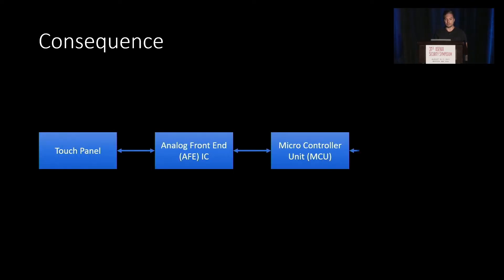So how does this even happen? Here you see a touchscreen pipeline. On the left side, the touch panel, which gets sensed by the analog frontend IC. This senses changes in capacitance on the touch panel when touched, which then forwards these measurements to the microcontroller unit, which interprets these changes as touchpoints and forwards this to the operating system.